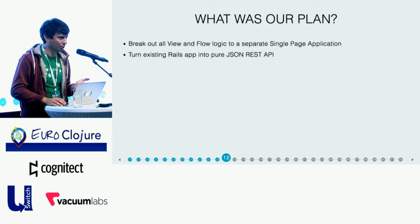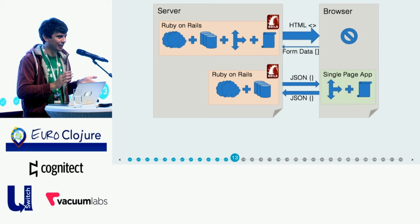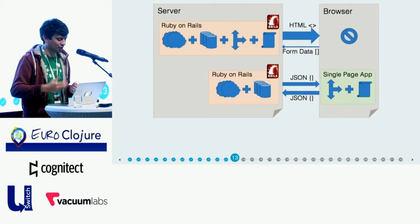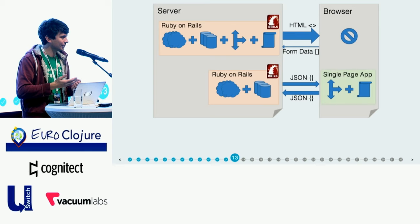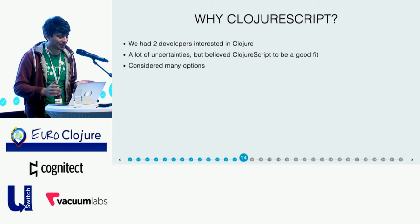And we would just turn the existing Rails application into a pure JSON REST API. So visually, at the top, this was our existing application where all the logic was basically in the back end, and the server just sent ready-made HTML to the browser directly. So it was not very interactive. What we were planning to do is move the flow and view logic into the browser so we could do some inline validations, for instance, and then talk to the back end using a JSON REST API. And for the single page application, we chose to use ClojureScript.